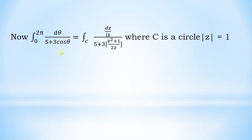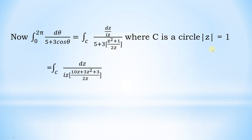The left-hand side, ∫₀²π dθ/(5 + 3 cos θ), becomes ∫_C (dz/iz) / (5 + 3·(z²+1)/(2z)), where C is the unit circle |z| = 1. Simplifying, this equals ∫_C dz / (iz · (10z + 3z² + 3)/(2z)), which gives f(z) = 1/(3z² + 10z + 3).